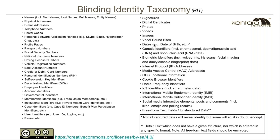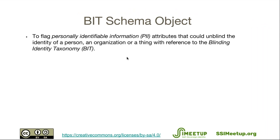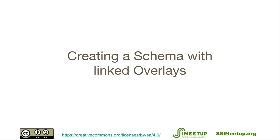This is how the BIT fits into the schema build. We've put it in as a BIT schema object — BIT stands for Blinding Identity Taxonomy. It's not so much an overlay; it's actually built into the schema so that when an issuer creates a schema they can flag which elements are on the taxonomy. Subsequently, if you wanted to decentralize data from that schema, those flagged attributes would be encrypted on a public data store.